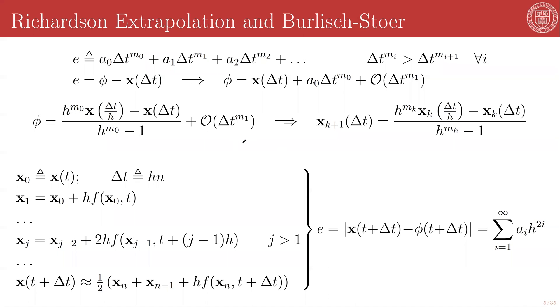So we can repeat this process over and over again, removing higher and higher orders of error, and get a general recursive equation of the form: x_{k+1}(Δt) equals h^{m_0} x_k(Δt/h) minus x_k(Δt) over h^{m_k}-1, where x_0, starting this whole process, is just x(Δt), whatever our first approximation to this was.